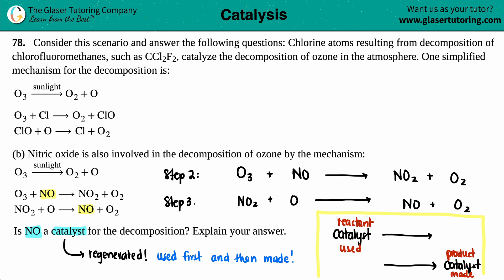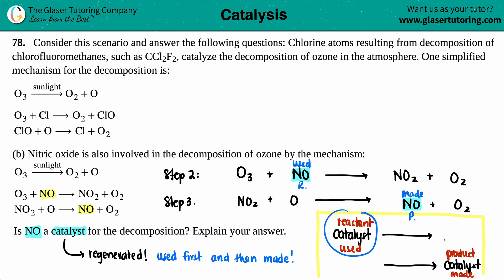Step three says that NO2 plus O yields NO plus O2. So here is my NO in step two, and here is my NO in step three. Was it used or made first? It first comes up as a reactant, which means it was used first. Then it came back as a product — it was made. So it's on the reactant side first, then the product side.